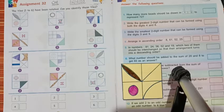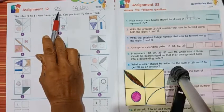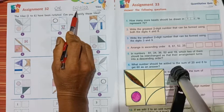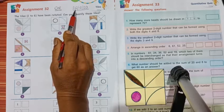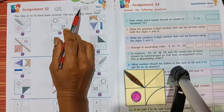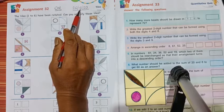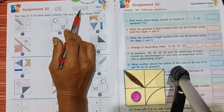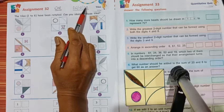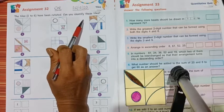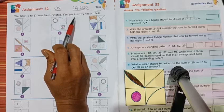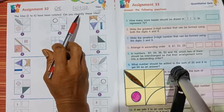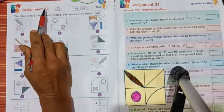So let's open page number 36. Write CW and today's date. What is today's date? 26th. And which month is going on? 12th, December 2020. And which day is today? Saturday. Today is Saturday. Assignment 32.